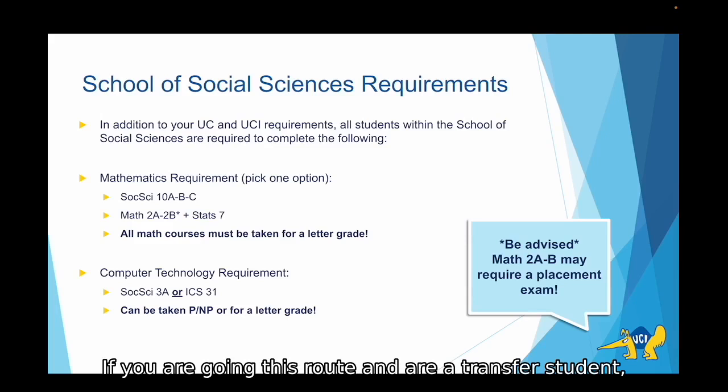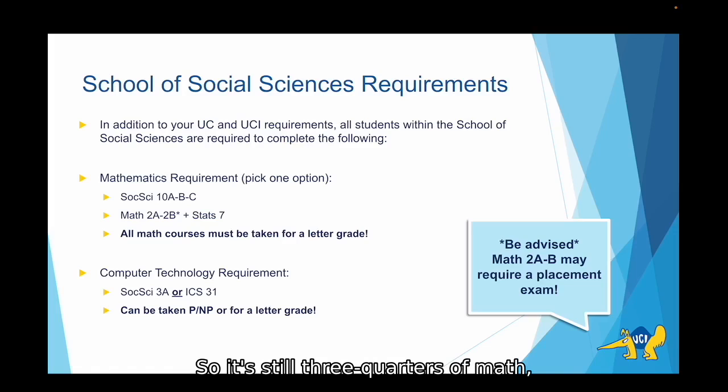If you are going this route and are a transfer student we advise starting this your very first quarter at UCI so that you are able to finish it in a timely manner. The calculus sequence is composed of math 2A and math 2B and stat 7, so it's still three quarters of math but instead of only statistics it is two quarters of calculus and one quarter of statistics.